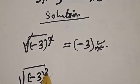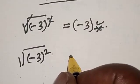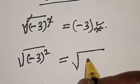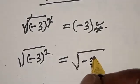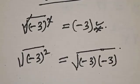So let's solve properly. We have square root of minus 3 square. Then we know that this is equal to square root of minus 3 multiplied by minus 3.